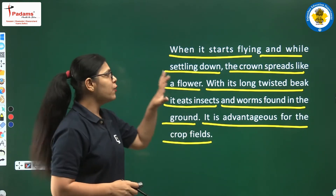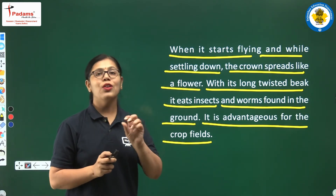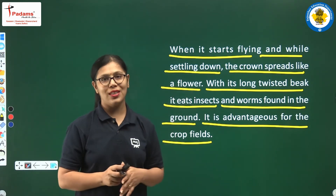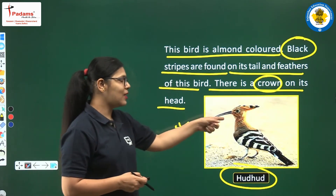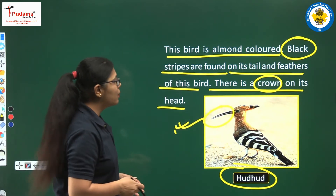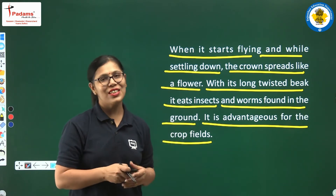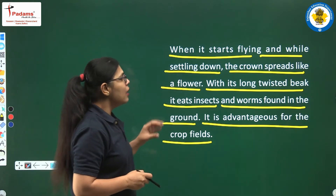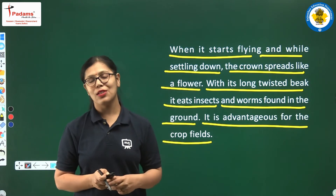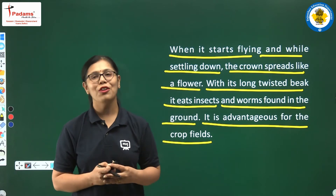So about Hudhud — when it starts flying and then when it starts settling down, its crown actually spreads like a flower. With its long twisted beak, as you can see in this picture, it eats insects and worms. It is quite interesting that this bird is advantageous for crop fields because it eats all the insects and worms found in any kind of field.